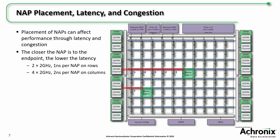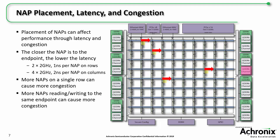Latency on the rows and columns can easily be calculated. It takes two NOC clock cycles, or about one nanosecond, from one NAP to the next on columns. For congestion, you need to consider the number of NAPs located on a single row or column. Several NAPs on a single row generating traffic can contribute to more congestion compared to if you spread the NAPs across different rows. Similarly, if several NAPs are all sending transactions to the same target endpoint, the bottleneck can be at that endpoint.